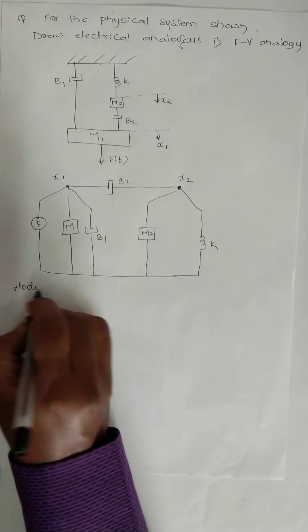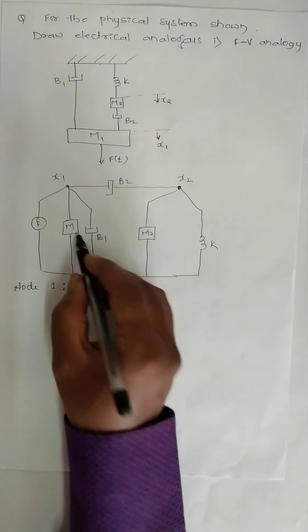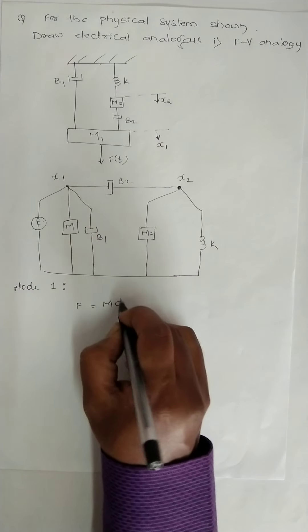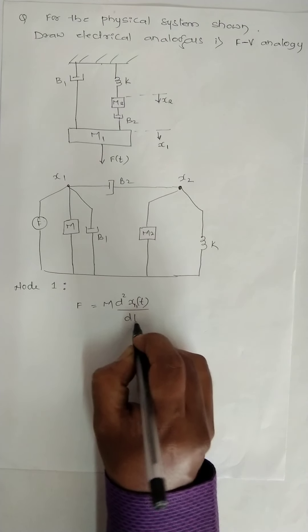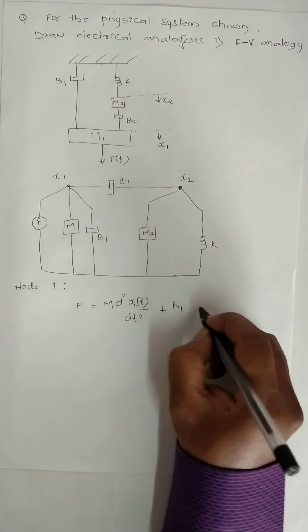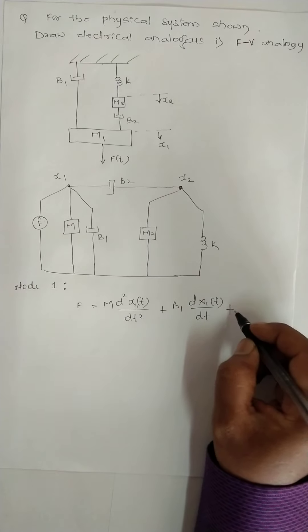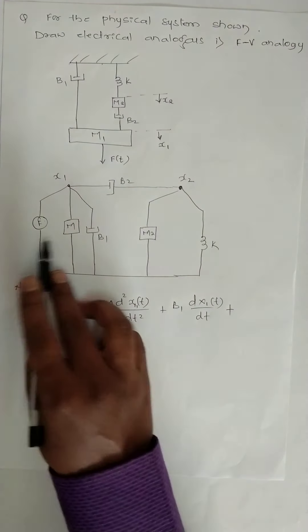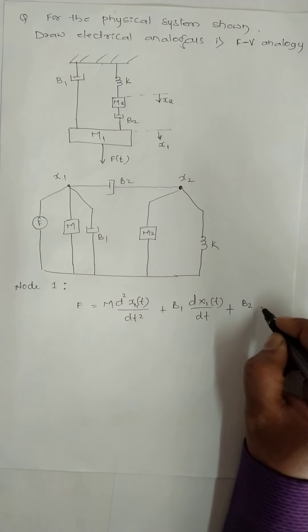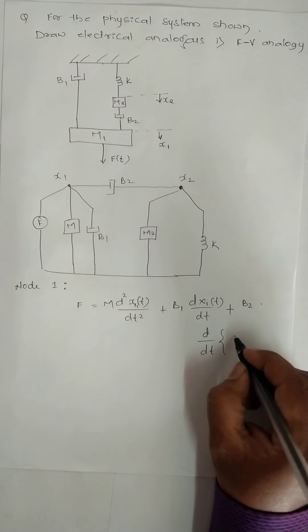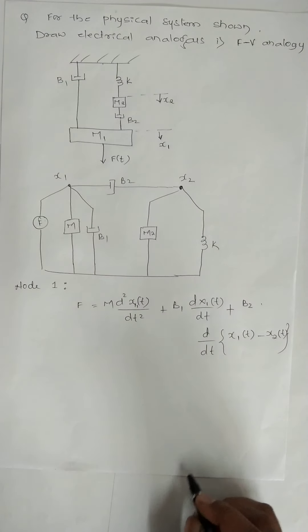Now we will write equilibrium equations. For node 1, F is equal to M1 d²x1/dt² plus B1 dx1/dt. These two are over. Now in between terms, B2 that is d/dt(x1(t) - x2(t)).